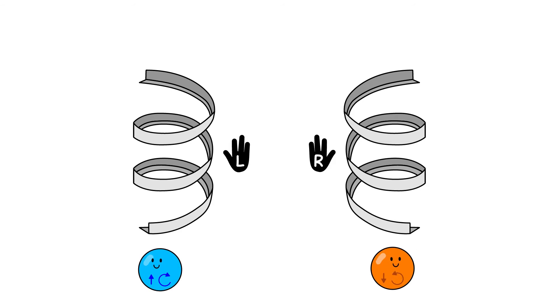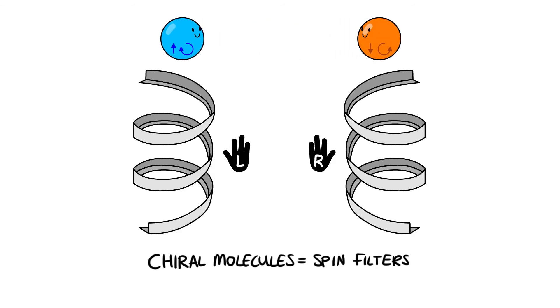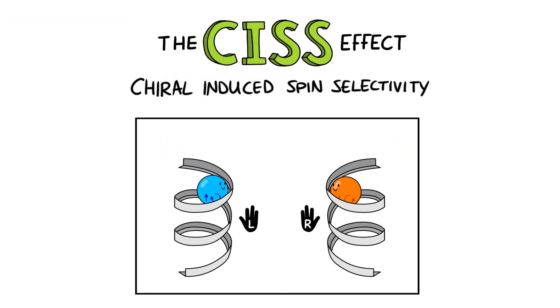Which spin is preferred depends on the handedness of the molecules, right or left hand-like symmetry, and on the direction of motion. So, chiral molecules are like spin filters. This is the CISS Effect.